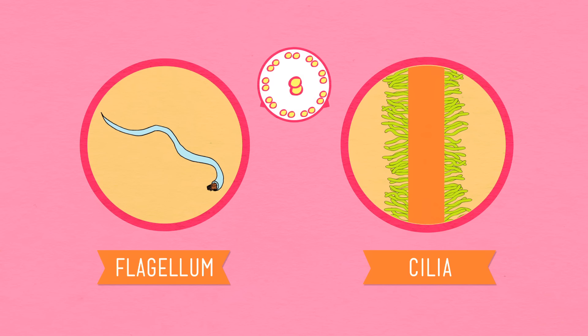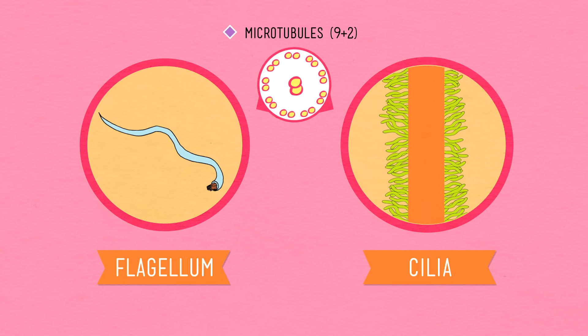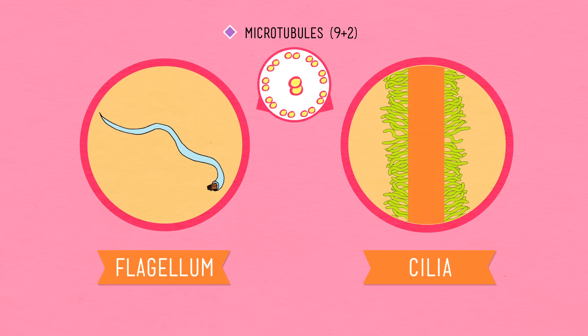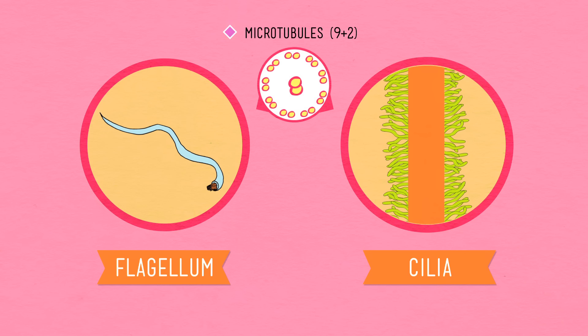And our lungs and throat cells have cilia that push mucus up and out of our lungs. Cilia and flagella are made of long protein fibers called microtubules and they both have the same basic structure. Nine pairs of microtubules forming a ring around two central microtubules. This is often called the nine plus two structure. Anyway, that's just so you know when you're approaching the city, watch out for the cilia and flagella.